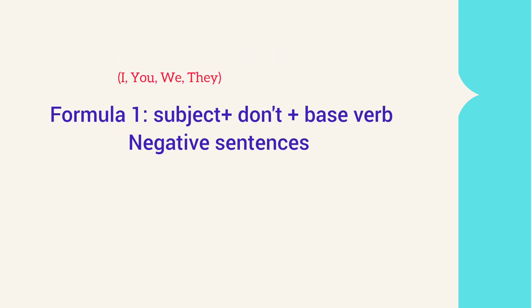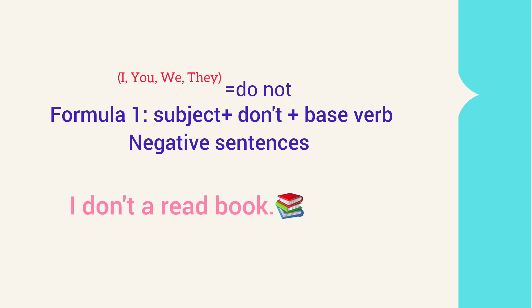Formula 1: Negative sentences. Subject: I, you, we, they — plus don't plus base verb. For example: I don't read a book.